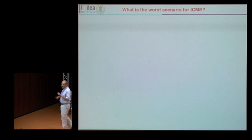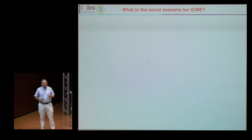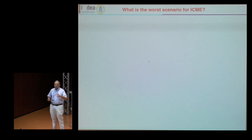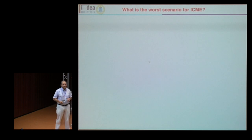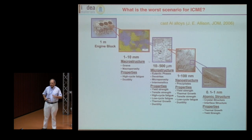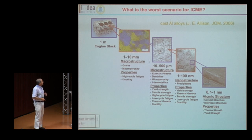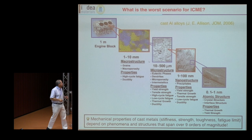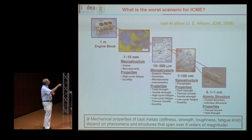Now, what is the worst possible scenario for integrated computational materials engineering — the most difficult problem to tackle? It's not photonics, because in photonics everything that matters happens at the length scale of microns. It's not electronics, because in electronics everything happens at the nanometer level, where DFT can solve the problems. The most difficult problems are standard structural metallic materials, because the mechanical properties — stiffness, strength, toughness, fatigue limit — depend on phenomena that span over nine orders of magnitude in length scales, without even talking of time scales.